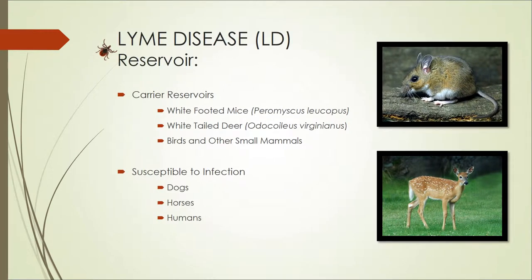Carrier reservoirs for Borrelia burgdorferi carry the bacterium but are unaffected by it. White-footed mice and white-tailed deer are the main carrier reservoirs. Birds and other small mammals can also act as carriers. Dogs, horses, and of course humans are all susceptible to infection.